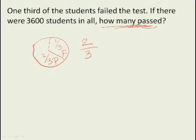Two thirds of 3600 is the number of students that passed. That's it. Three times one, three times two, so that gives you 1200 times 2, gives you 2400. That's your answer.